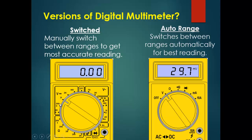For example, the voltage range is between 200 millivolts and 2000 volts, so we need to select the proper voltage range before measurement. In an auto-range multimeter there is no range selection — we only have to select the function and it will automatically detect and measure the value.